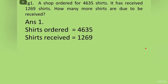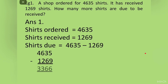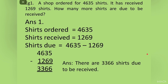After that we will read the question again: How many more shirts are due to be received? For this we will subtract the number of shirts received from the total number of shirts ordered. We will write: shirts due = 4,635 minus 1,269. Then we subtract, write them one below the other, find the answer. The answer is: there are 3,366 shirts due to be received.